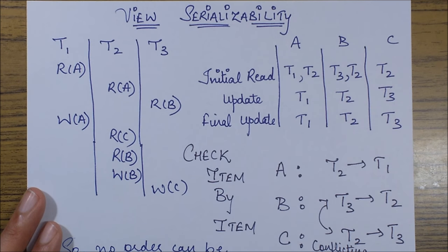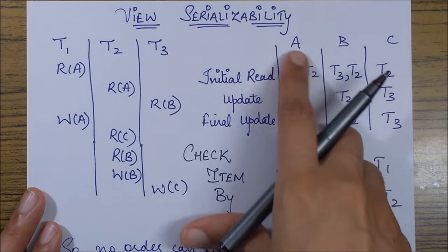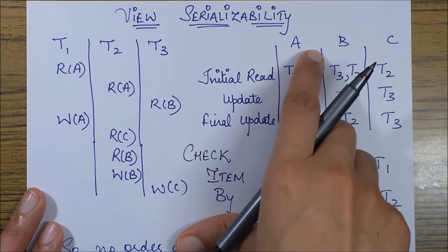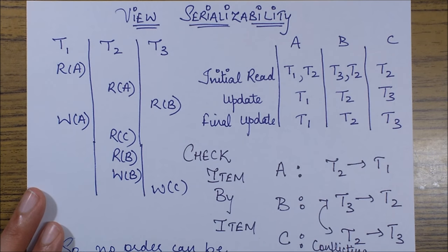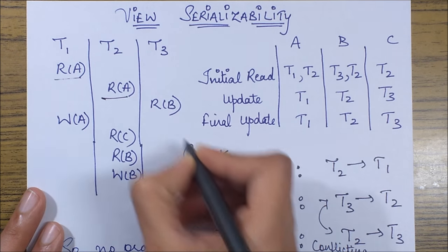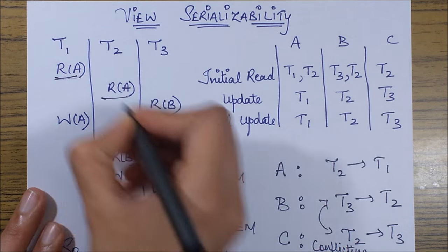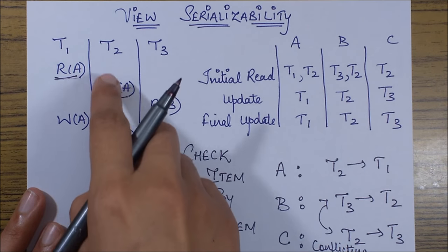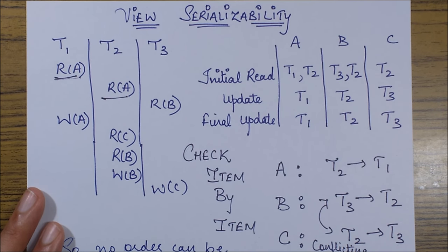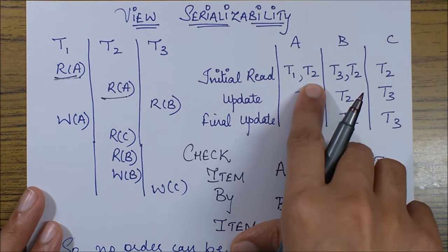To check for view serializability, we enlist three operations corresponding to the three data items: initial read, update, and final update. For data item A, we have two read operations with no write operation before them, meaning both reads are initial reads from the database. So we list the initial reads for A as T1 and T2.